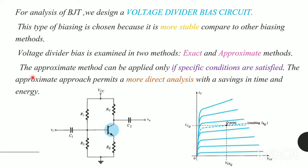This approximate approach permits a more direct analysis with savings in time and energy. Here, this diagram denotes our voltage divider bias configuration. And the corresponding graph defines the Q-point for the voltage divider bias configuration.